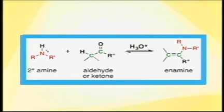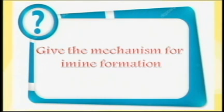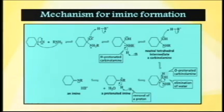Aldehydes and ketones react with primary amine RNH2 to give imine. With secondary amine RNH-R, nitrogen nucleophile addition gives enamine. The mechanism of imine formation involves the amine nitrogen attacking the carbonyl carbon, forming a tetrahedral intermediate. Proton transfer occurs via ammonia ion to give neutral tetrahedral intermediate.